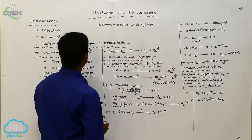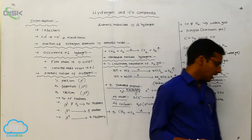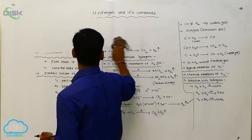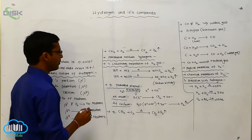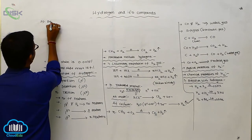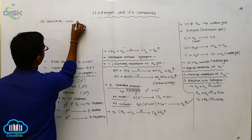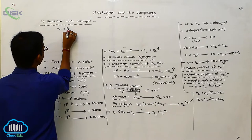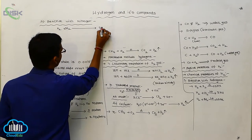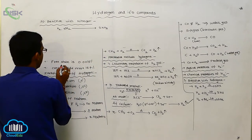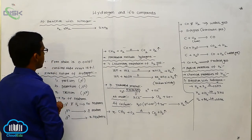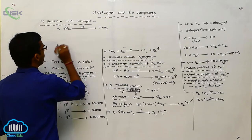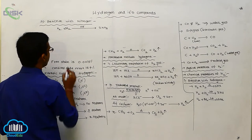The second reaction is with nitrogen. Hydrogen reacts with nitrogen to form ammonia. The preparation of ammonia is called the Haber process. In this Haber process, a catalyst is used.